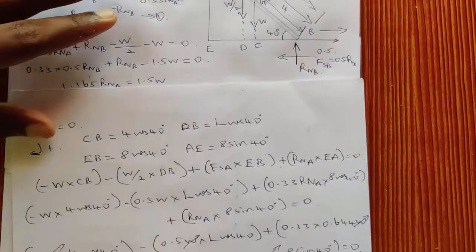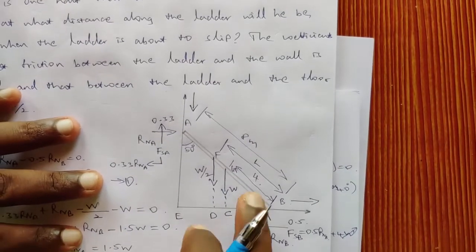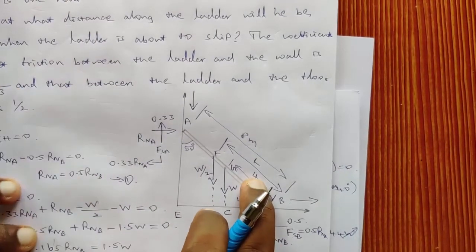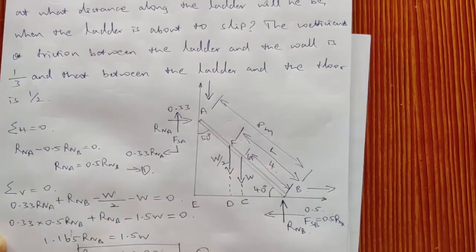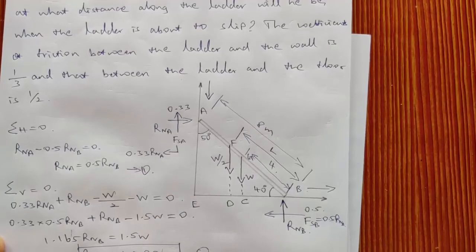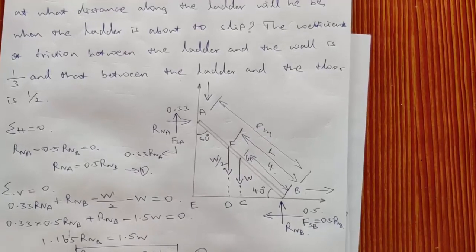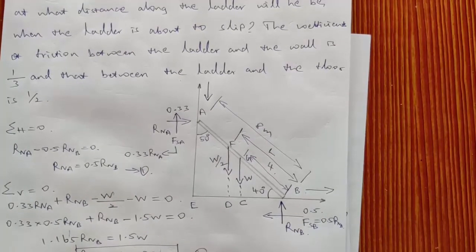So if the boy is at a distance of 4.05 meters along the ladder, the ladder is at the state of impending motion — that is, it is about to slip. Thank you.